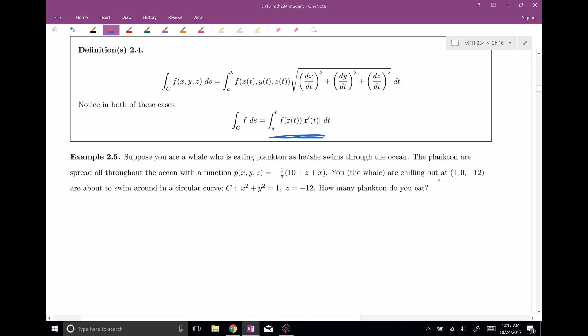All right, so the plankton are spread all throughout the ocean with this nice plankton density function. So this is how many plankton there are at any given point in the ocean. You, the whale, are chilling out at 1, 0, negative 12. So the big thing here is that you're beneath the ocean, maybe negative 12 meters or something like this beneath the ocean. And you're about to swim in this circle right here. X squared plus y squared equals one. And you're gonna stay at the constant z equals negative 12. And the question is, how many plankton do you eat?